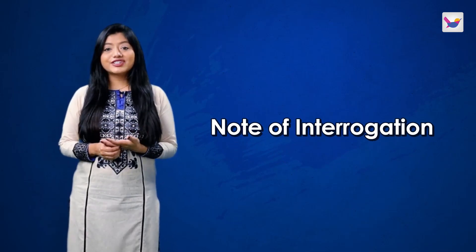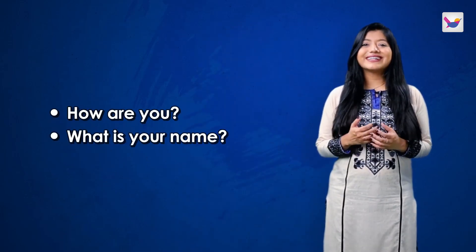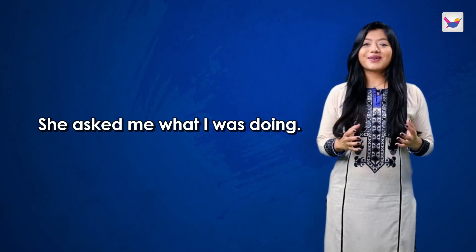Another commonly used punctuation mark is the note of interrogation. It is used at the end of an interrogative sentence — we also call this mark a question mark. For example: 'How are you?' 'What's your name?' However, for an indirect or dependent question, a full stop is used. For example: 'She asked me what I was doing.' Today we looked at the importance of using punctuation marks and five punctuation marks. In the next episode, we will see the remaining punctuation marks and the use of capital letters. Till then, you take care. Thank you.